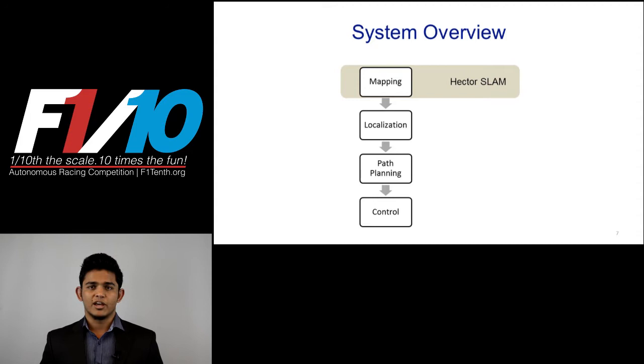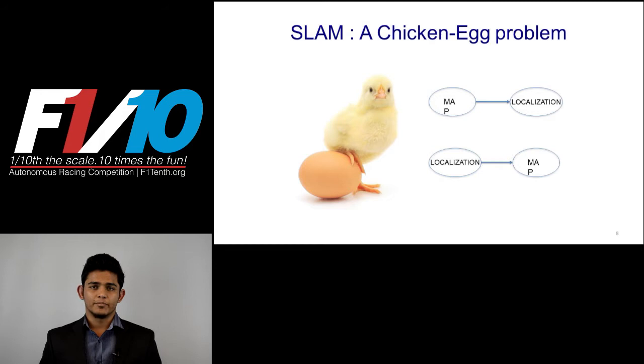To begin with, let's go through the concept of simultaneous localization and mapping, also known as SLAM. SLAM is often considered as a chicken-egg problem. You need a map of the environment to determine robot location, but you need the robot's location first to build the map itself.